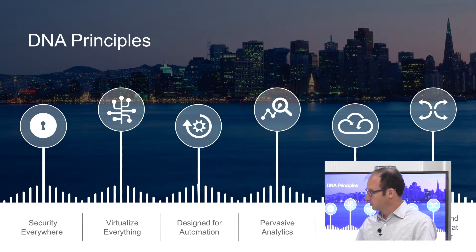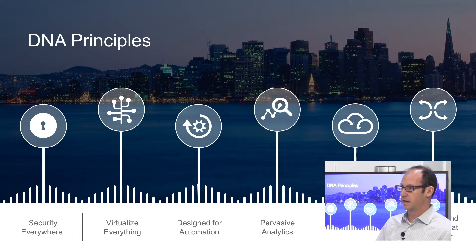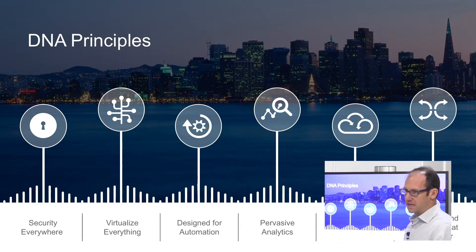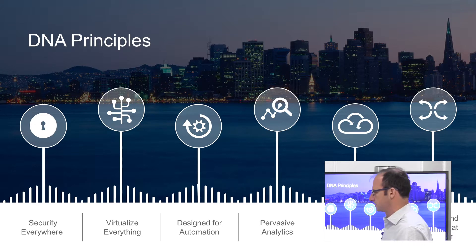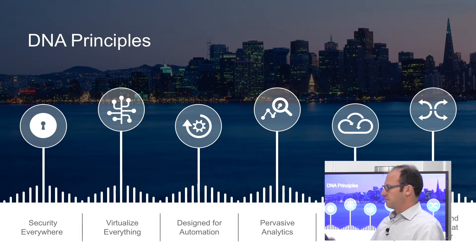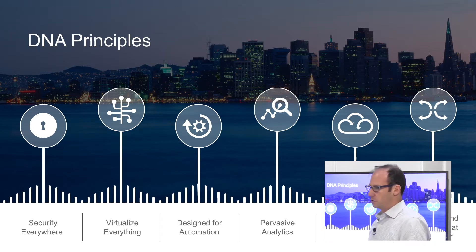The second principle is virtualization, which we're going to talk about a lot today. Virtualization enables the organization to respond quickly to business needs and deploy the right services anywhere with software. Automation is another key element — if I'm going to have virtual services, I want to deploy them quickly, automating the processes and policies. Getting analytics is another part — if I now have more devices, more applications, some in the cloud, some in private data centers, I need deep analytics everywhere on my network.